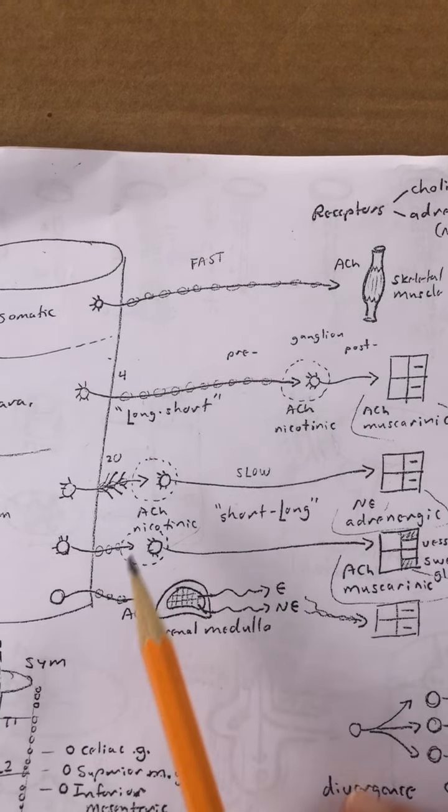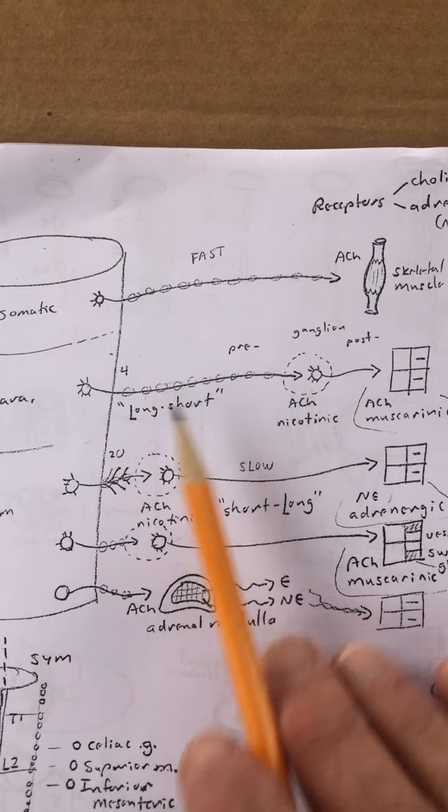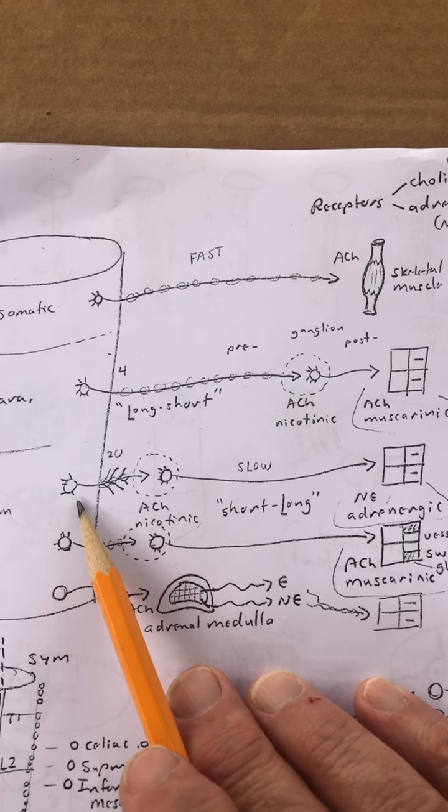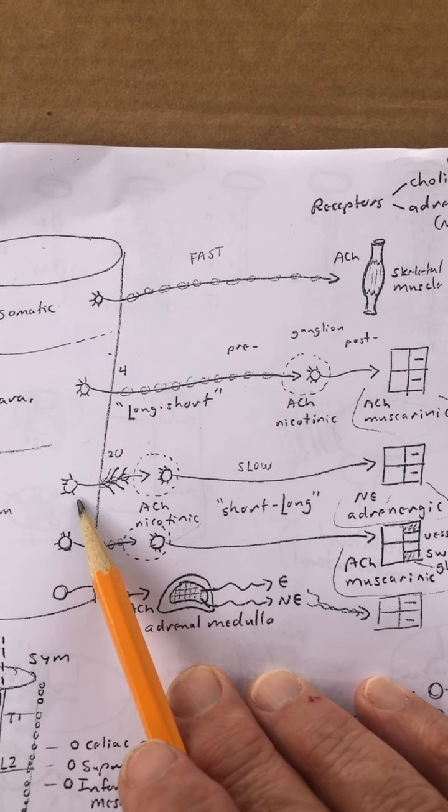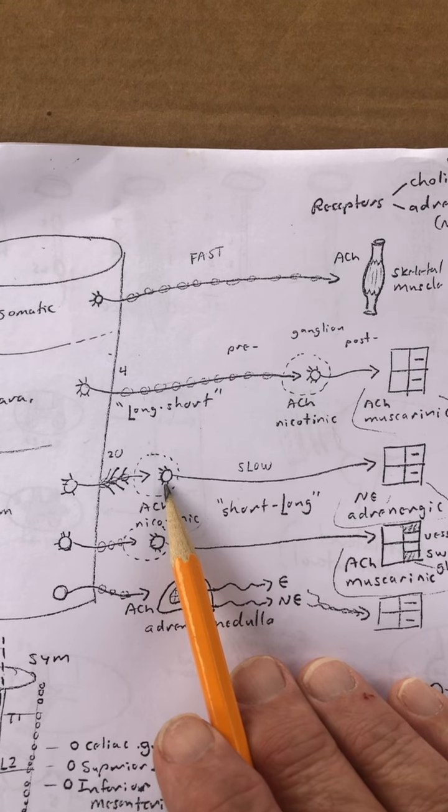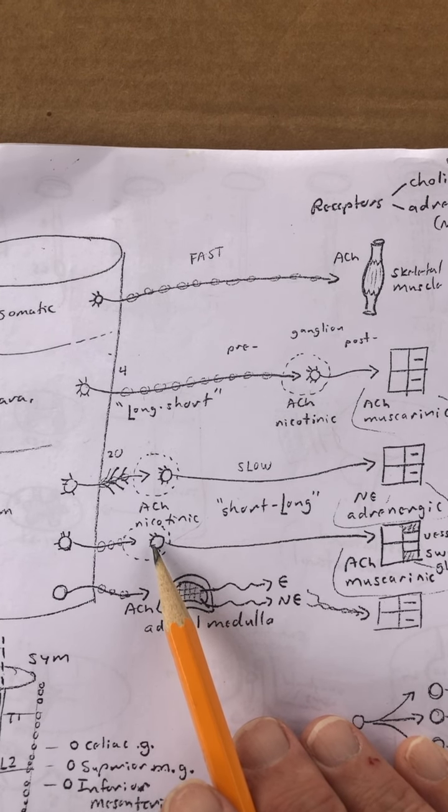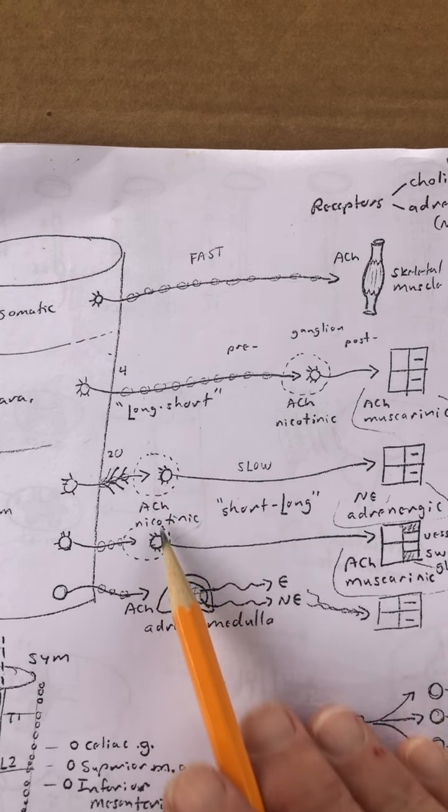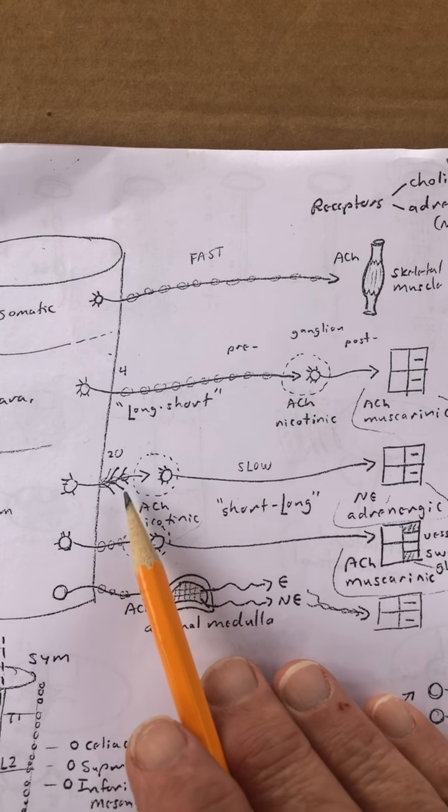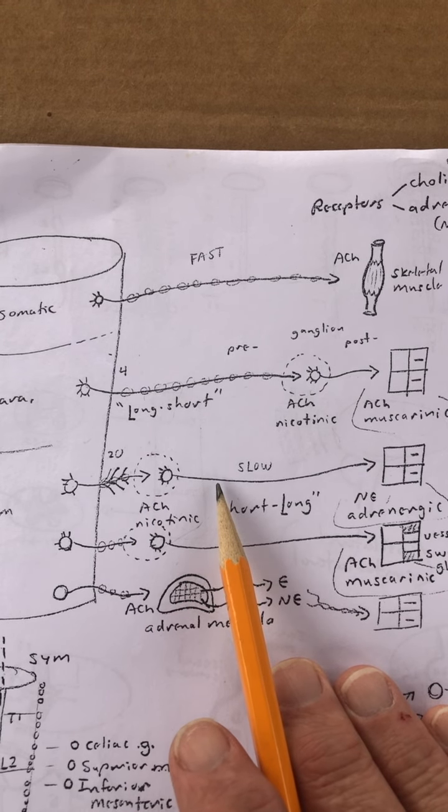Down to the sympathetic nervous system. And the sympathetic nervous system, well, parasympathetic was long short, sympathetic is short long. The body of the first motor neuron is found inside the central nervous system and it has a short axon, which then goes to a ganglion. The ganglion is located near the spinal cord, so very often it's called paravertebral sympathetic ganglion, where these things synapse with the second neuron. The first one, of course, is the preganglionic neuron, the second one's the postganglionic neuron.